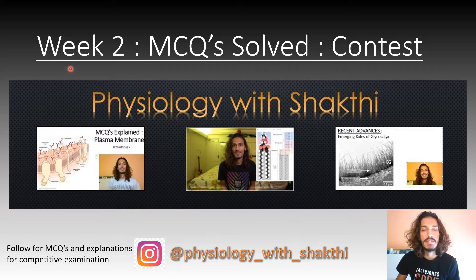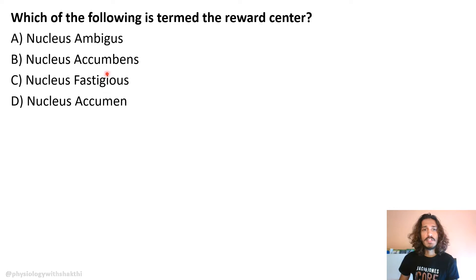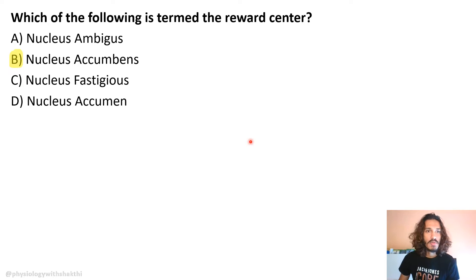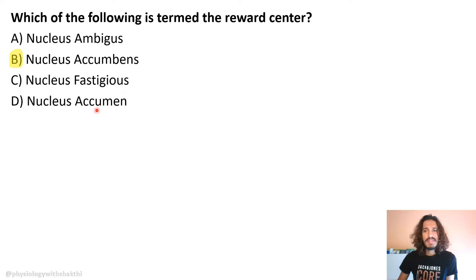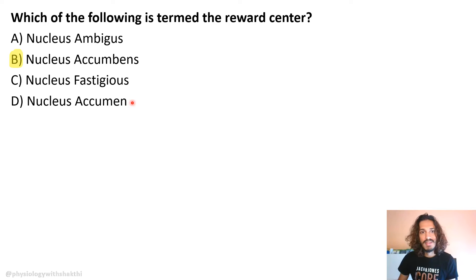Which of the following is termed the reward center? This is a pretty basic question and the answer is nucleus accumbens. Nucleus ambiguus is related to your vagus, and nucleus fastigii is also known as the fastigial nucleus, which is part of the cerebellum. Nucleus acumen is nothing — just something put in to confuse you.